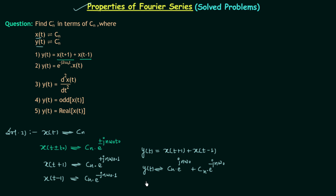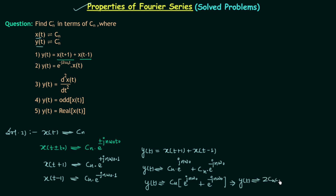Taking cn common, we get cn · [e^(jnω₀) + e^(-jnω₀)]. Since e^(jnω₀) + e^(-jnω₀) = 2cos(nω₀), the coefficient cn' = 2cn·cos(nω₀). This is the answer for the first question.